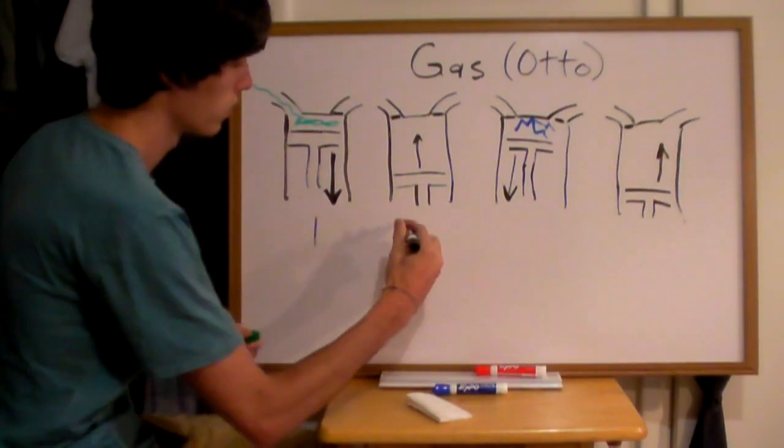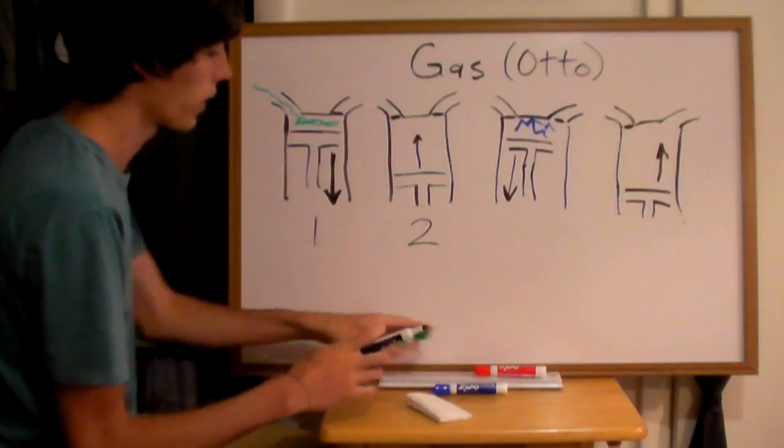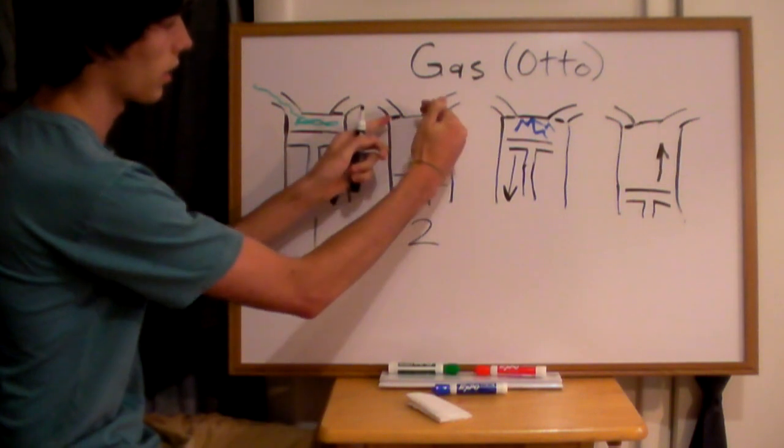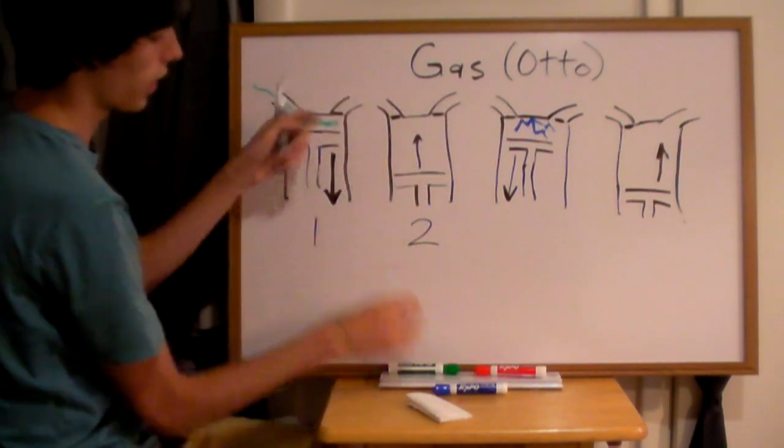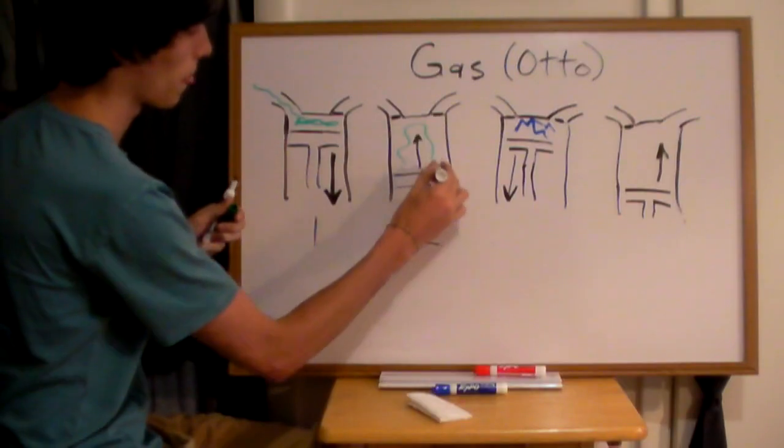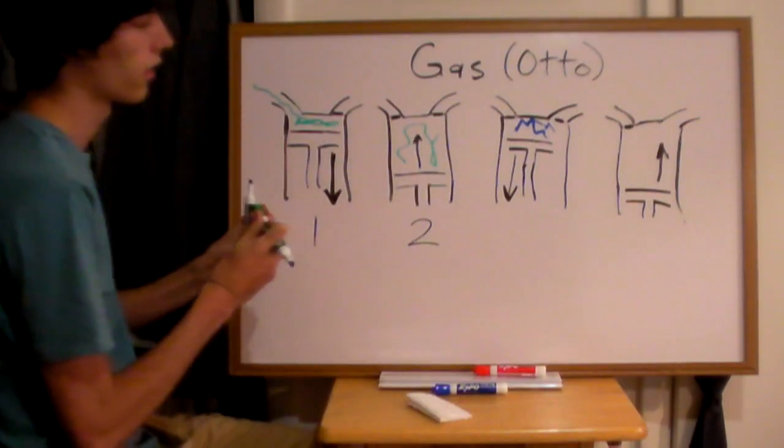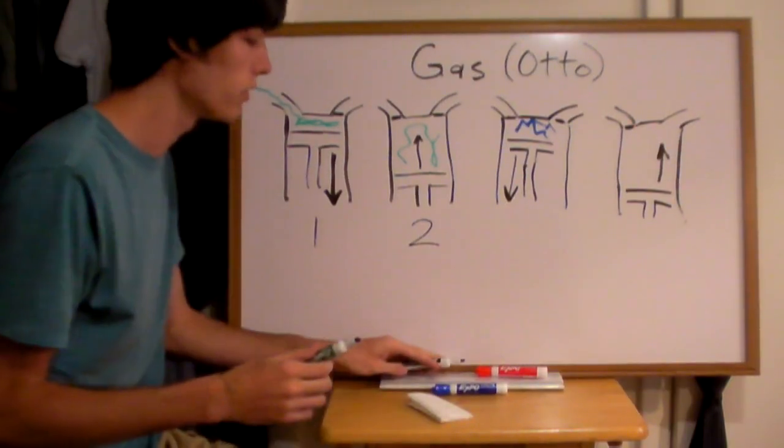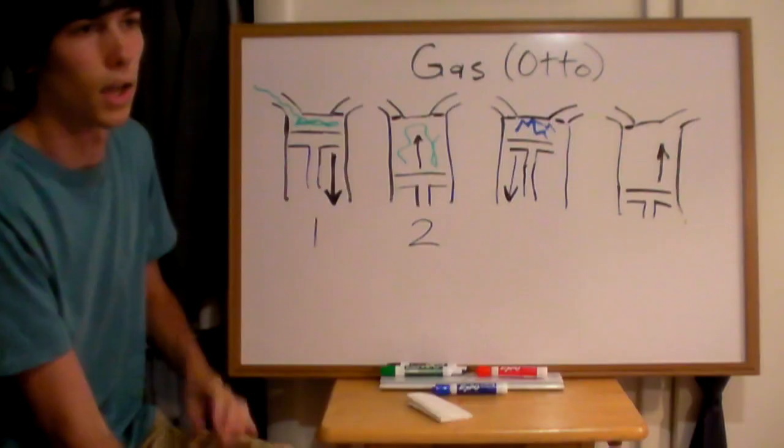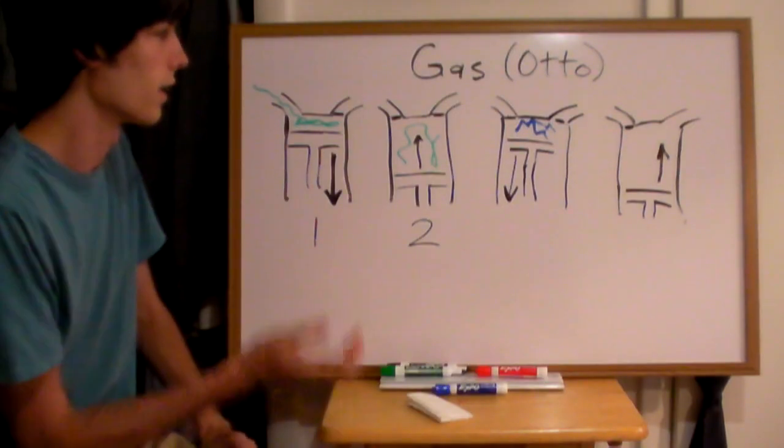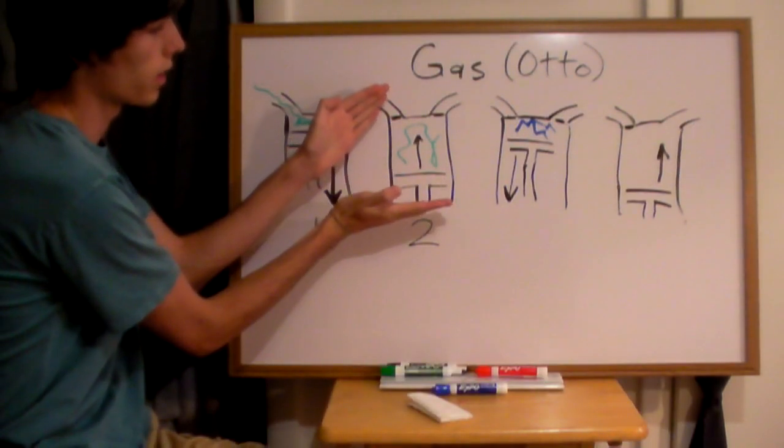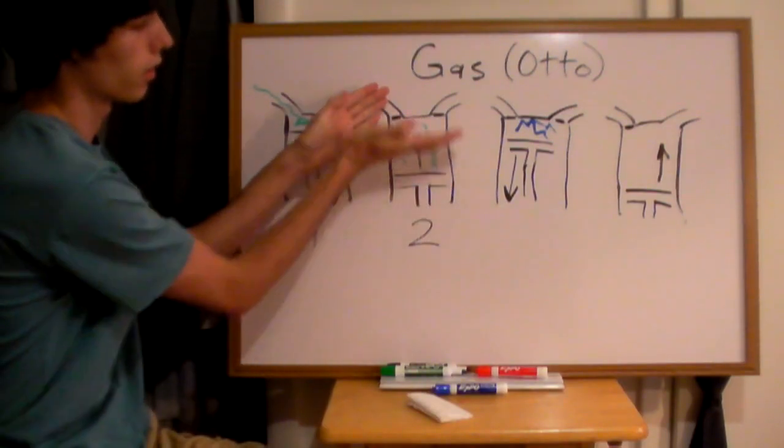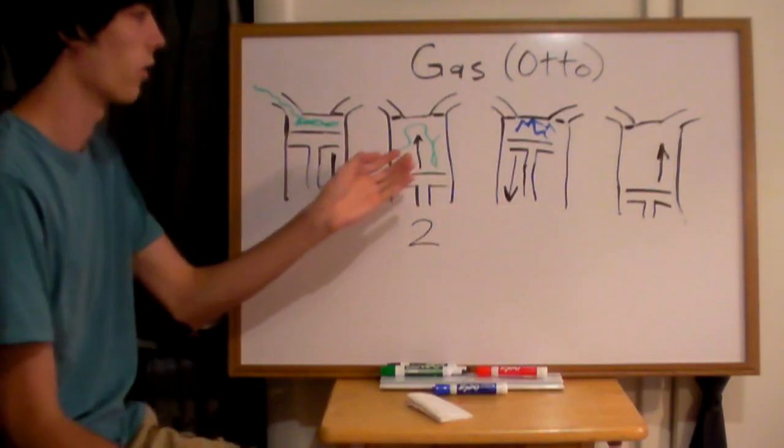The next step, step number two, we're going to have to compress this. So both the intake and exhaust valves right here are going to be closed off and it's going to take this air-fuel mixture which is in here and compress that. Now in gasoline engines the compression ratio only may be up to 10 to 1, meaning that the volume when this piston is down at the bottom compared to the volume when it's all the way compressed is 10 times greater. So that's what a compression ratio is.